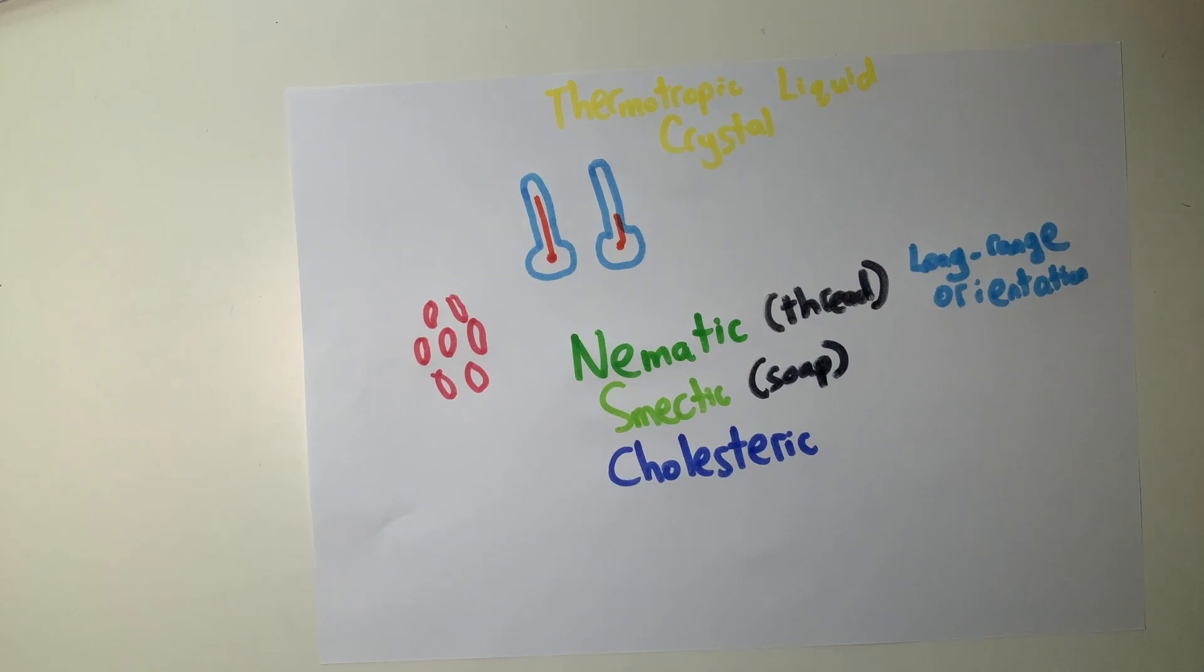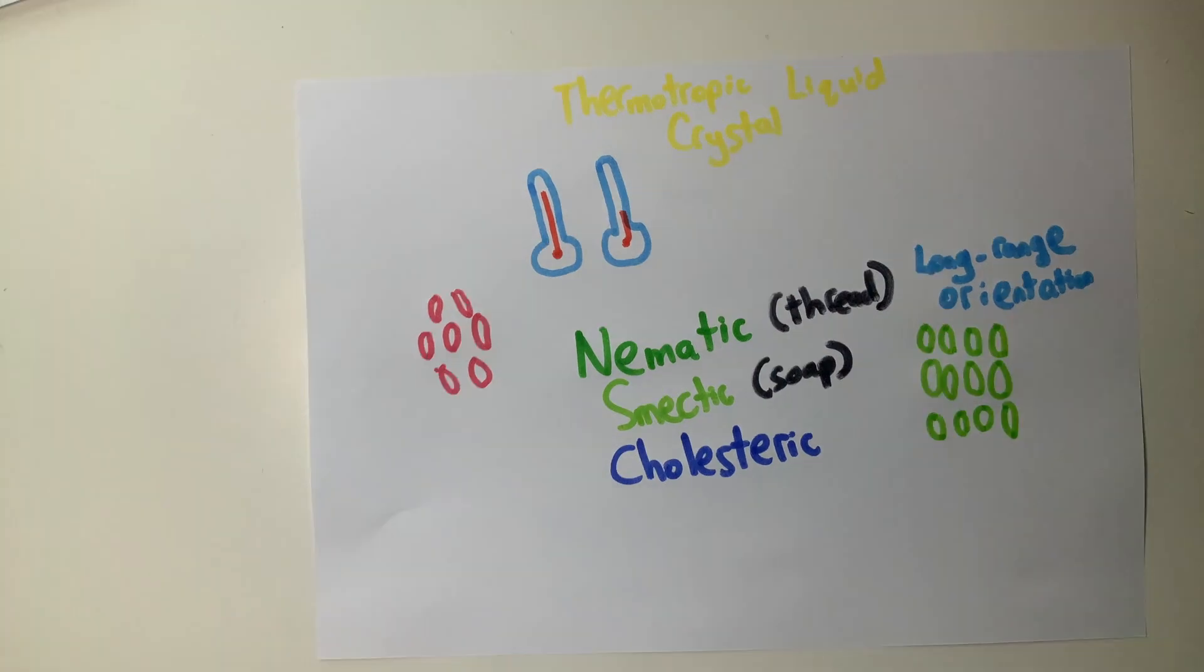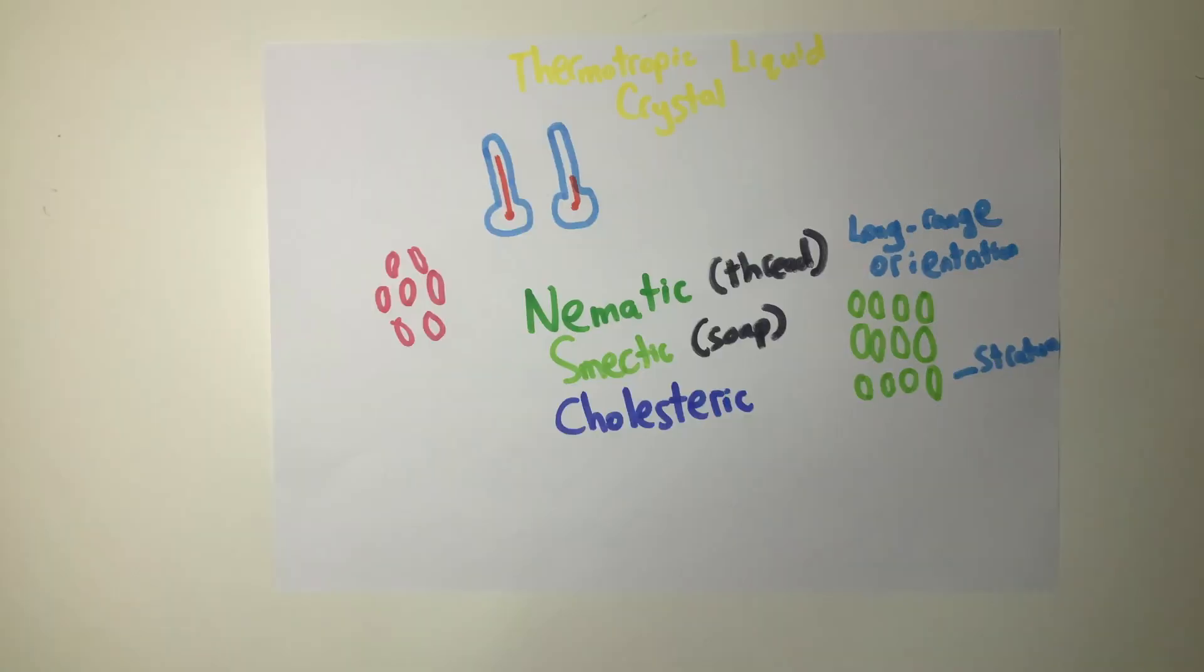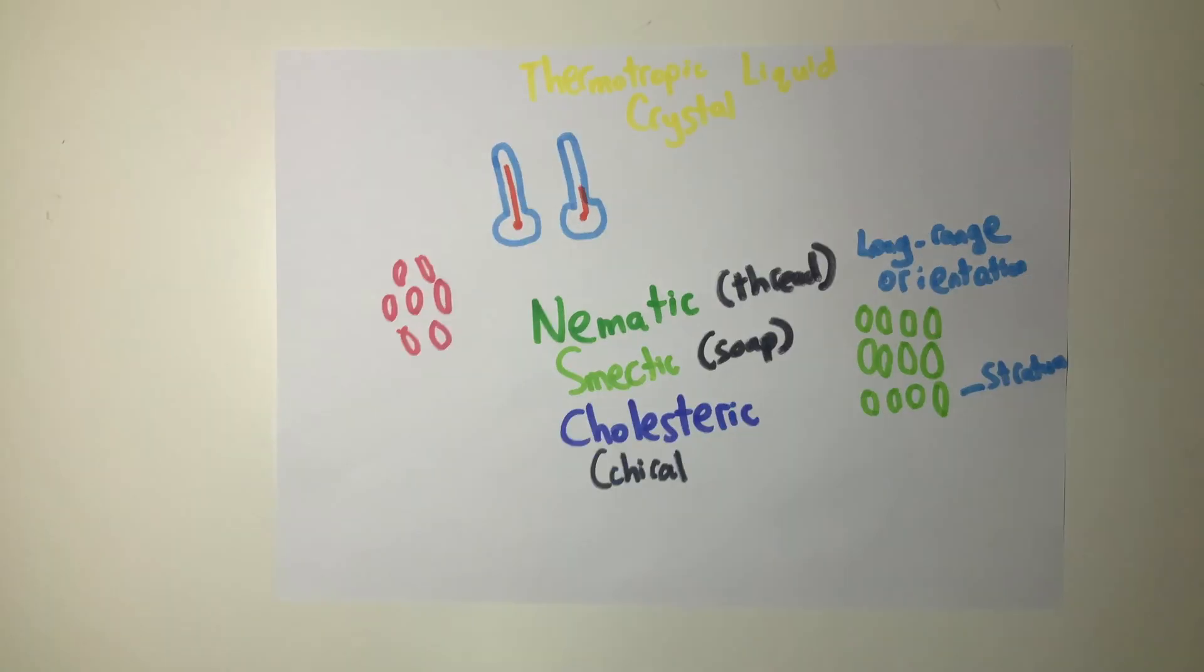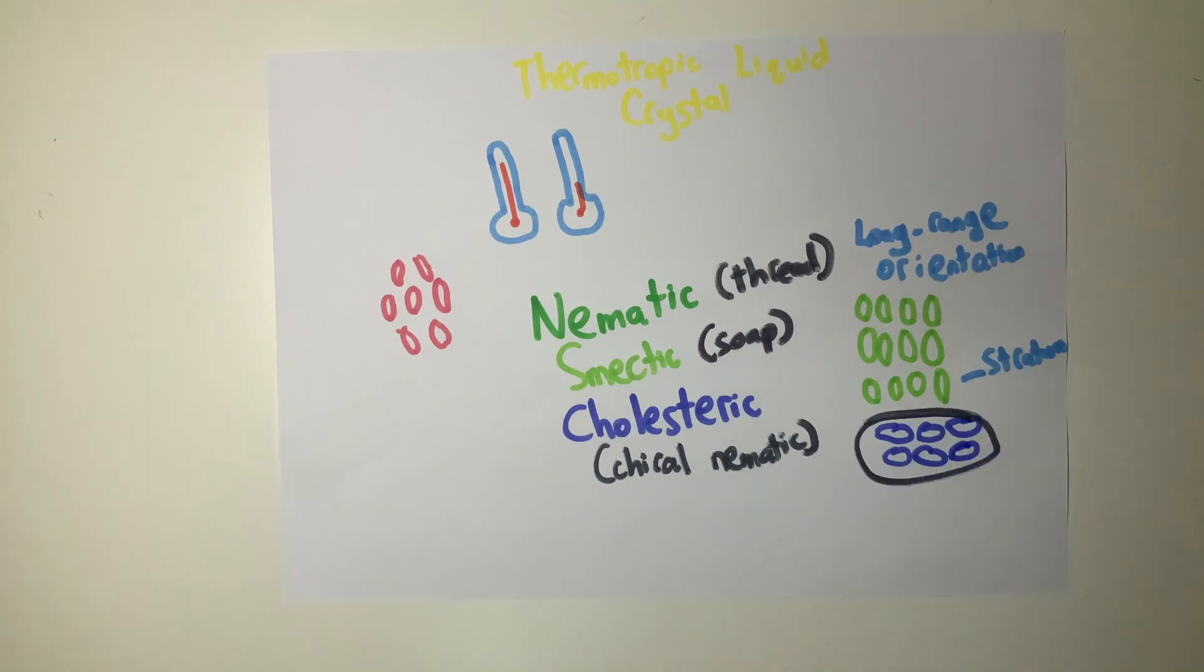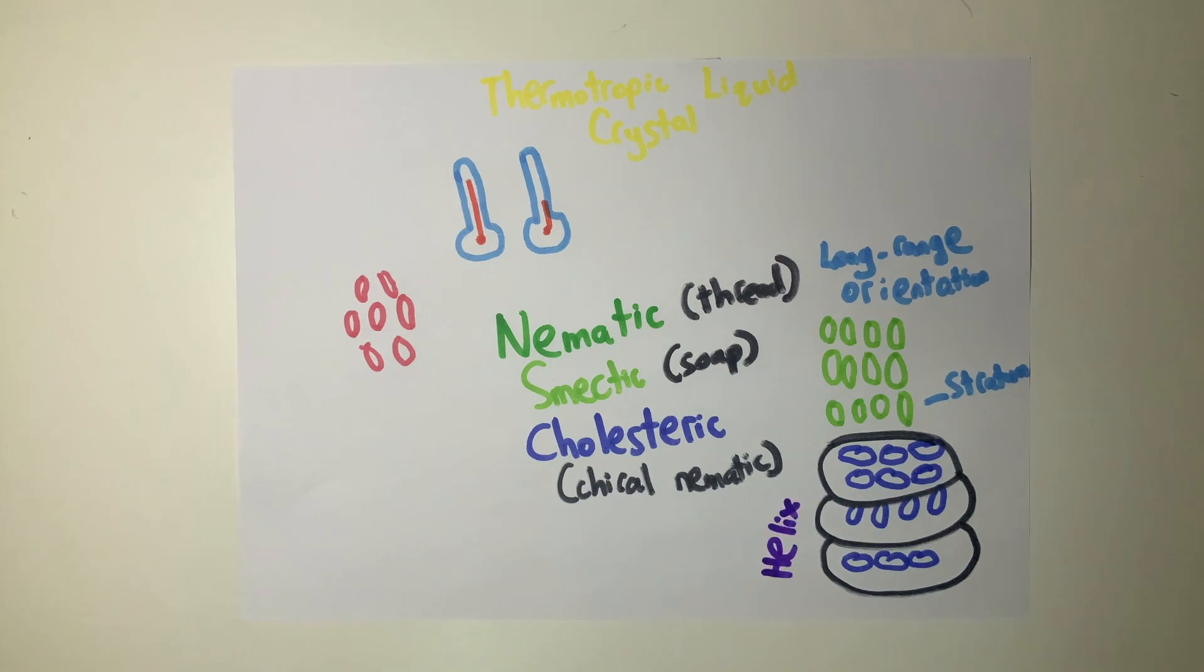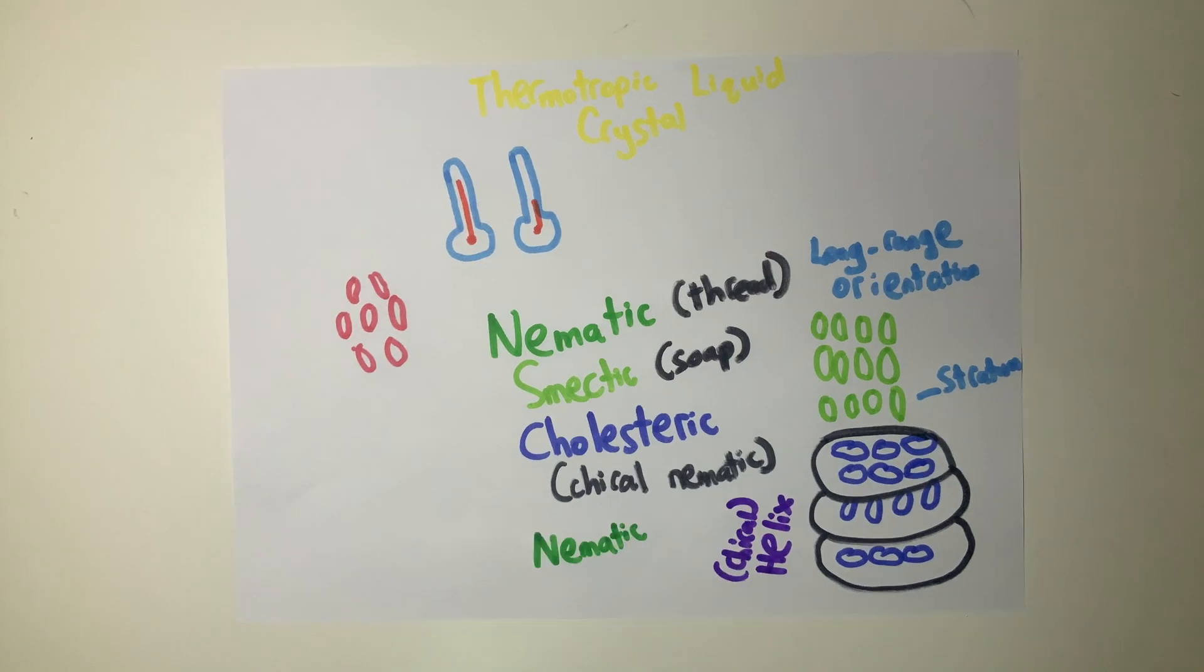Smectic liquid crystals, or soap-like, contain molecules arranged in strata as the particles are arranged in an almost normal plane with spacing between layers. Cholesteric liquid crystals, also known as chiral nematic liquid crystals, contain a combination of smectic and nematic liquid crystals with layers arranged in a helix.